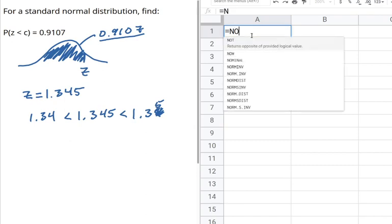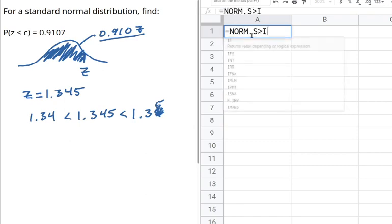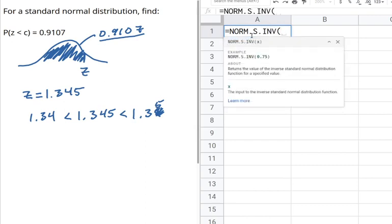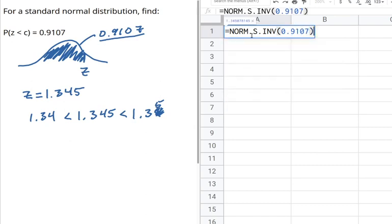So the way I'm going to do that is use the inverse standard normal distribution function. So that is equals NORM.S.INV for inverse. And now I type in the probability that I was given and it will give me the z-score that has that probability to the left.